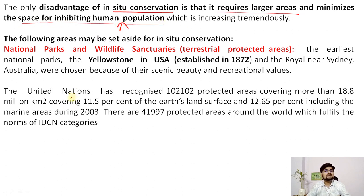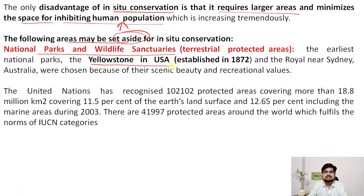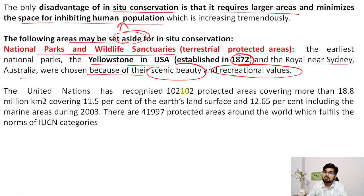Because of growing population, our requirement for land is increasing, and conserving too many areas in-situ can hinder development. Areas set aside for in-situ conservation include national parks and wildlife sanctuaries. Yellowstone in the USA, established in 1872, was one of the first national parks in the world. The UN has recognized more than about 12,100 protected areas covering more than 18.8 million square kilometers, covering 11.5% of Earth's land surface as of 2003.